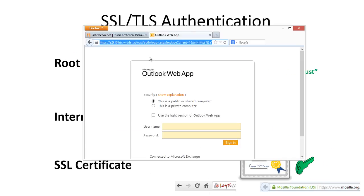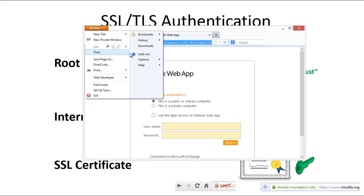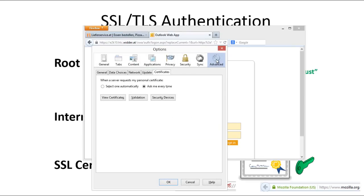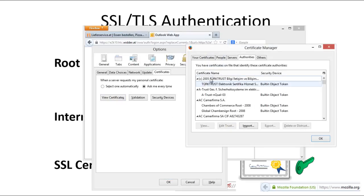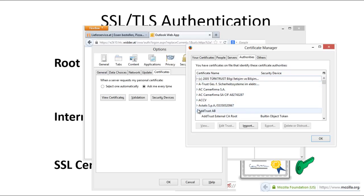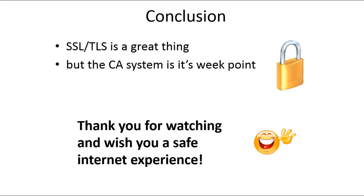Let's take a look at Firefox, for example. When I go to Options, Advanced, Certificates, and View Certificates, I see all those authorities — there are over 600 private companies, governments, and others. We rely upon them to verify other parties towards us. SSL, meaning TLS, is a great thing, but the CA system is its weak point. I thank you for watching and wish you a safe internet experience.